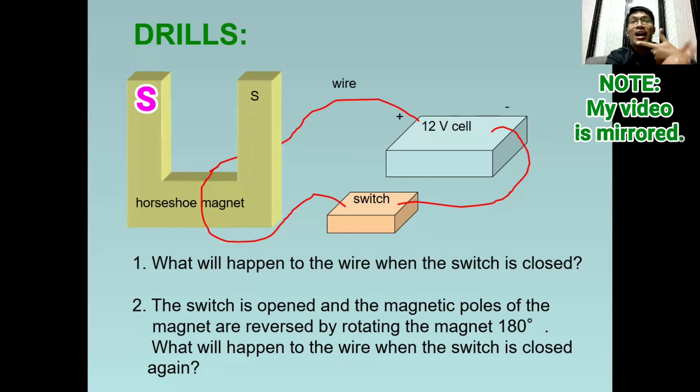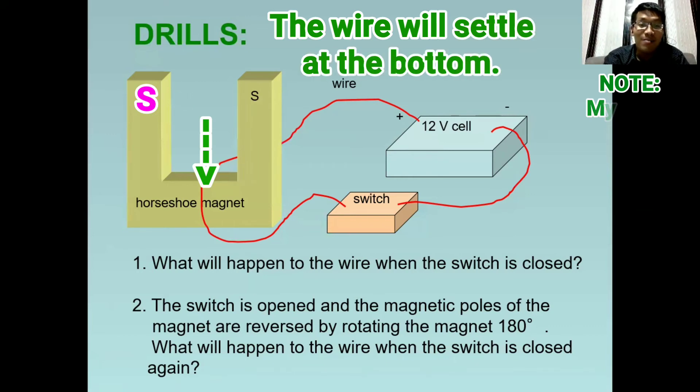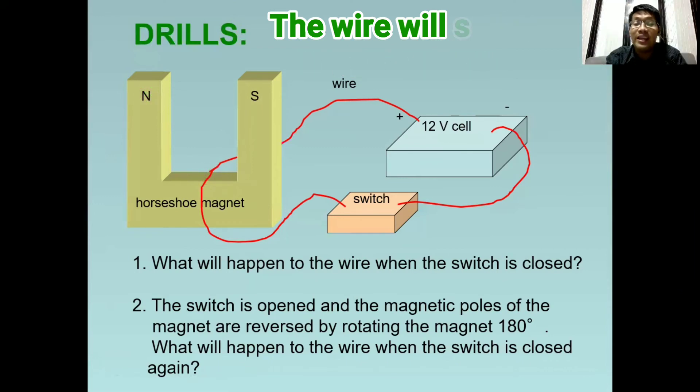Again, our forefinger represents the magnetic field. So we need to twist it at babalik na rin natin. So it's now again from north to south. Kung nakikita ninyo, yung finger ay still towards me or towards you. So therefore, the force now is pointing downward. So anong mangyayari sa wire? Ito ay pupunta sa ilalim or mag-settle dito sa ilalim because the force will pull it downward.